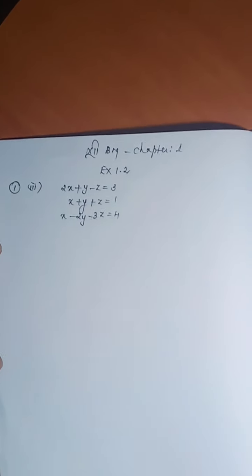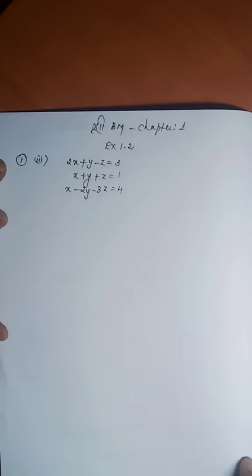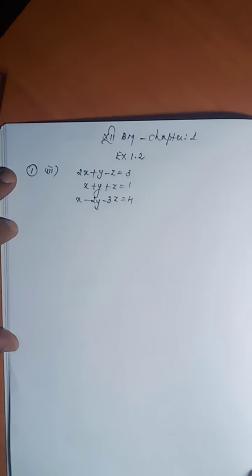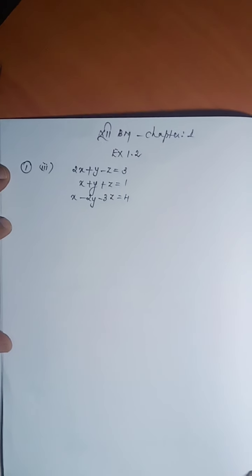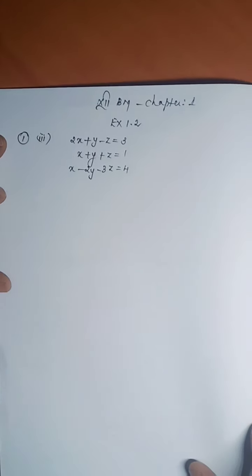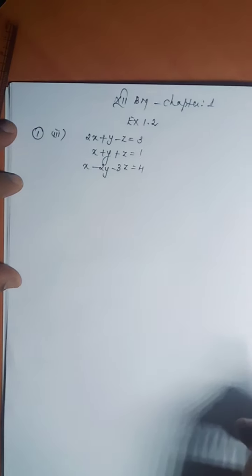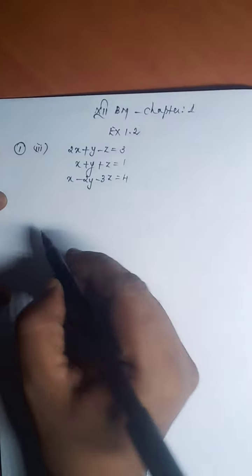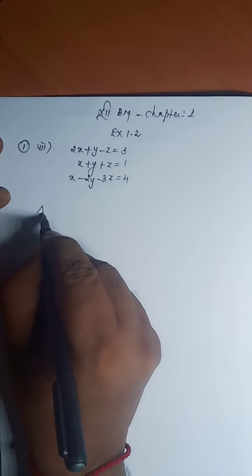Solving the simultaneous equations of 3 unknowns — the non-homogeneous equations of 3 unknowns by determinant method, another name Cramer's method. First we can find out delta.